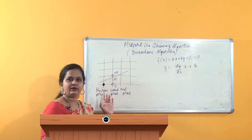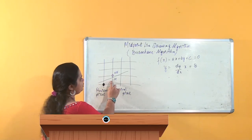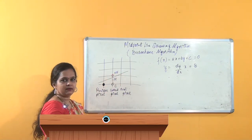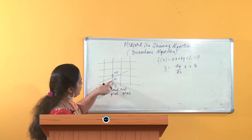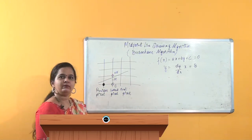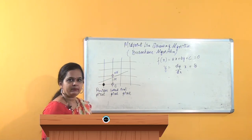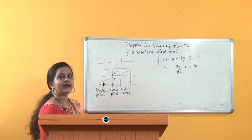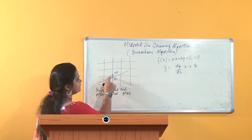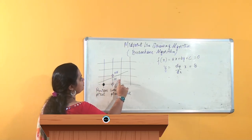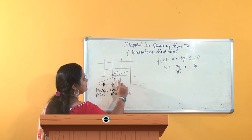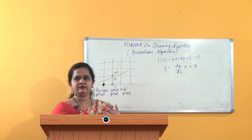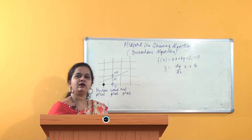Without any mathematical logic, you can simply observe that this is the midpoint of this grid segment — these two endpoints are the grid line ends, and this point is the midpoint of that line. When my line is traveling above the midpoint, I have to select the NE pixel. For example, if my line happens to be going below the midpoint, then I would select the E pixel. Mathematically, we derive an algorithm that gives accurate steps for the program.